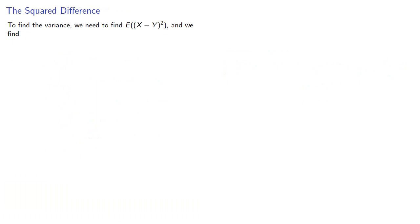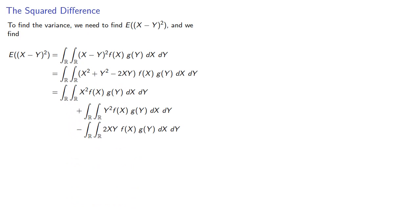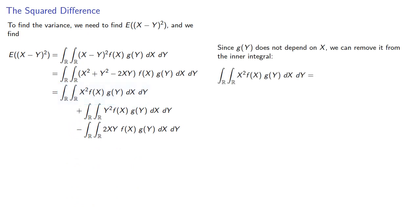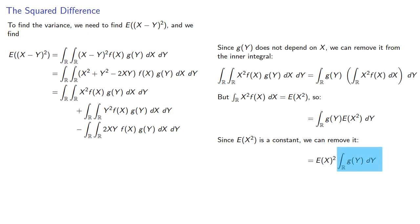Now to find the variance, we need to find the expected value of the square of the difference. We can expand and break up our integral. Consider this first integral. Since g(y) does not depend on x, we can remove it from the inner integral. The remaining integral is just the expected value of X squared. The expected value of X squared is a constant, so we can remove it, and the integral represents the probability that Y is between plus or minus infinity, which equals 1. So that first integral is E[X²].